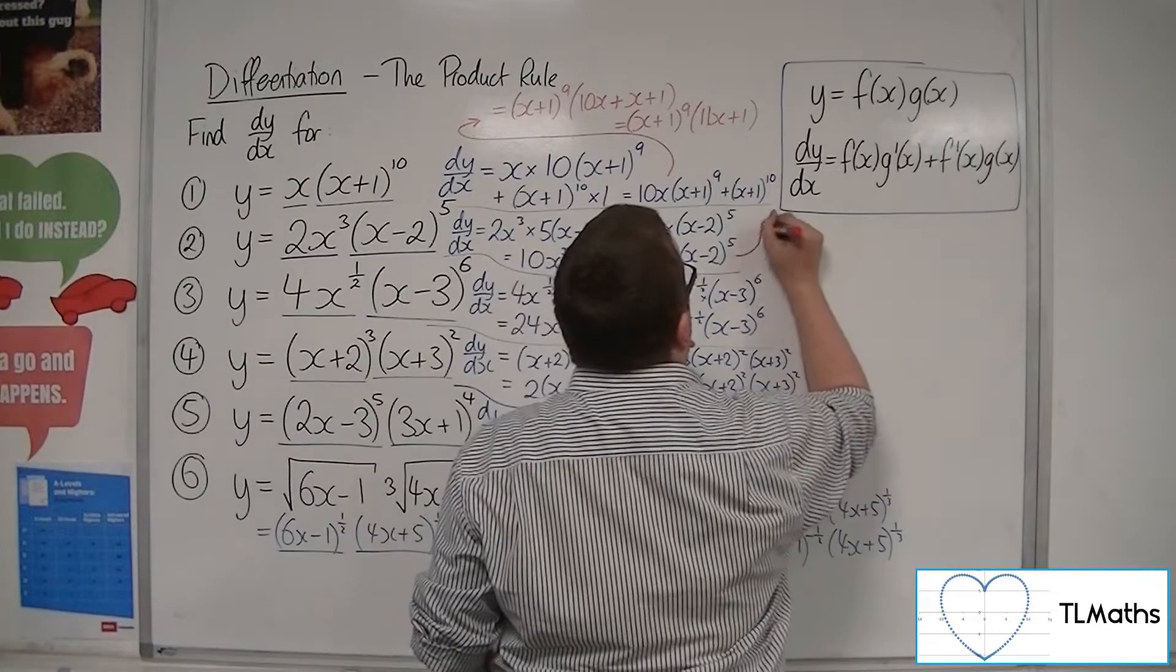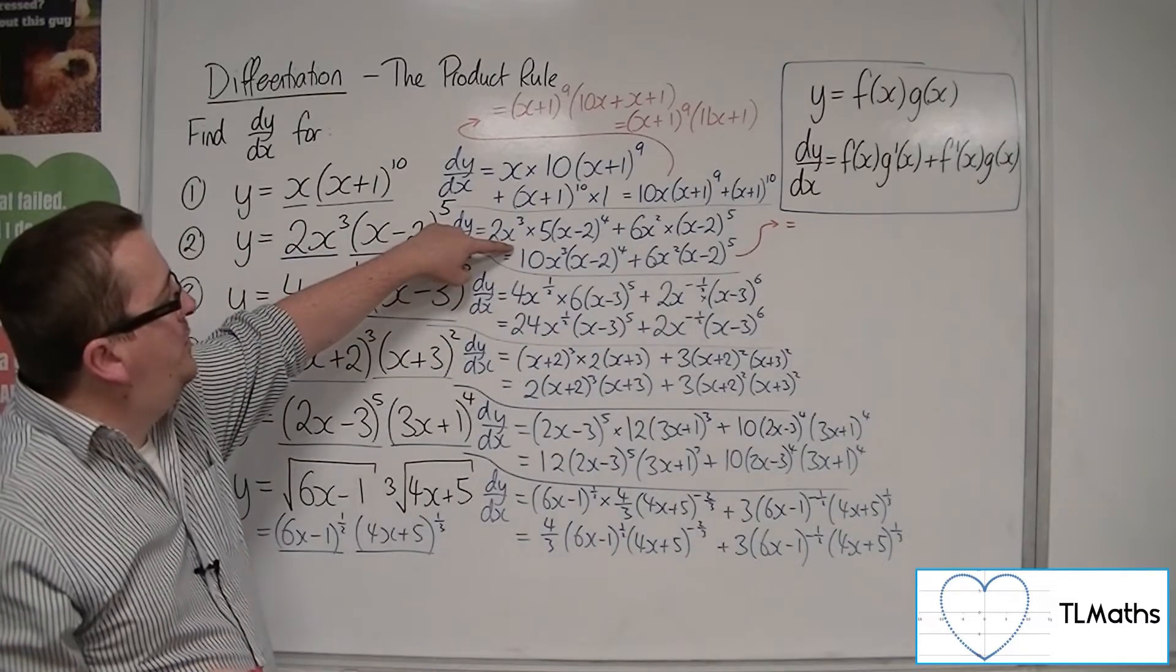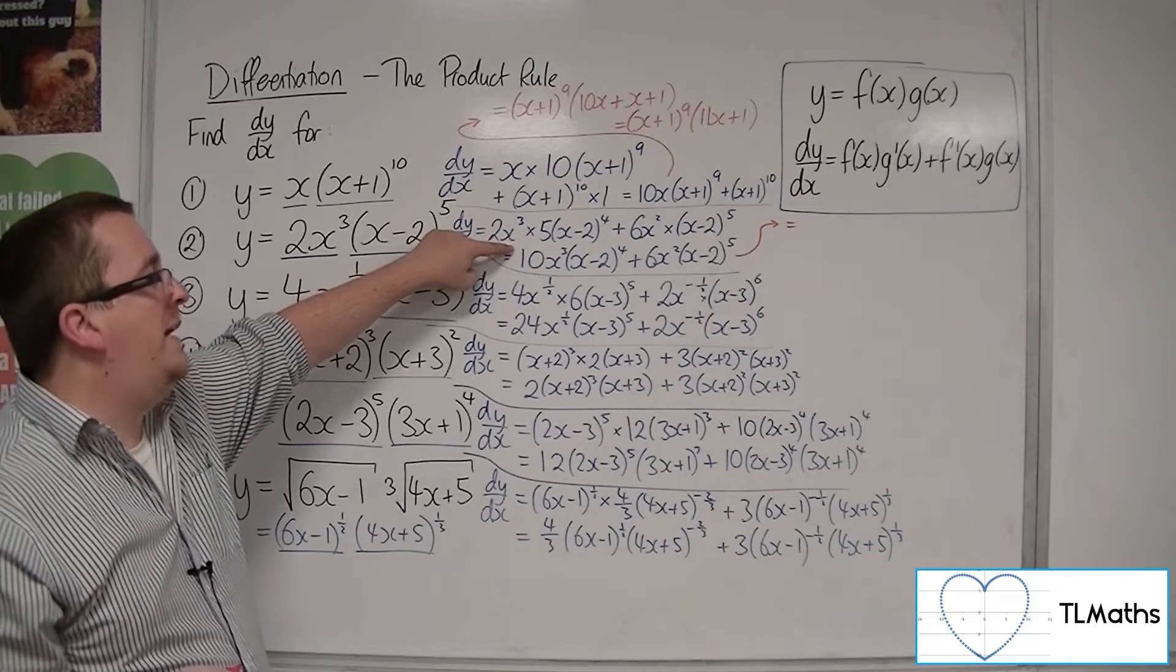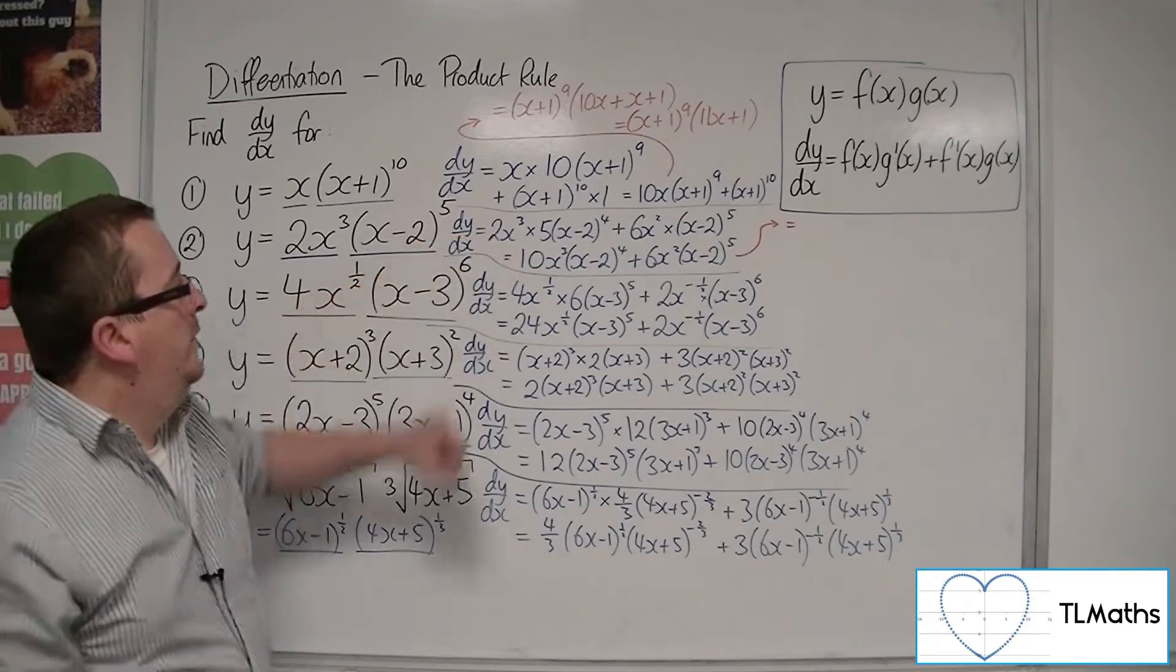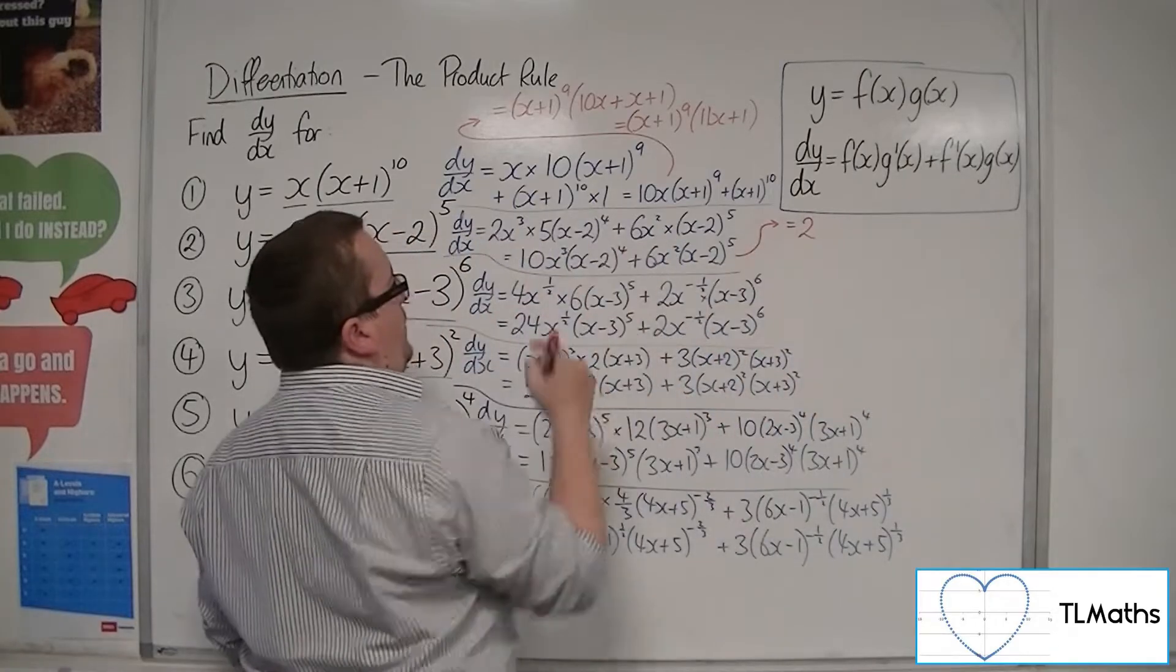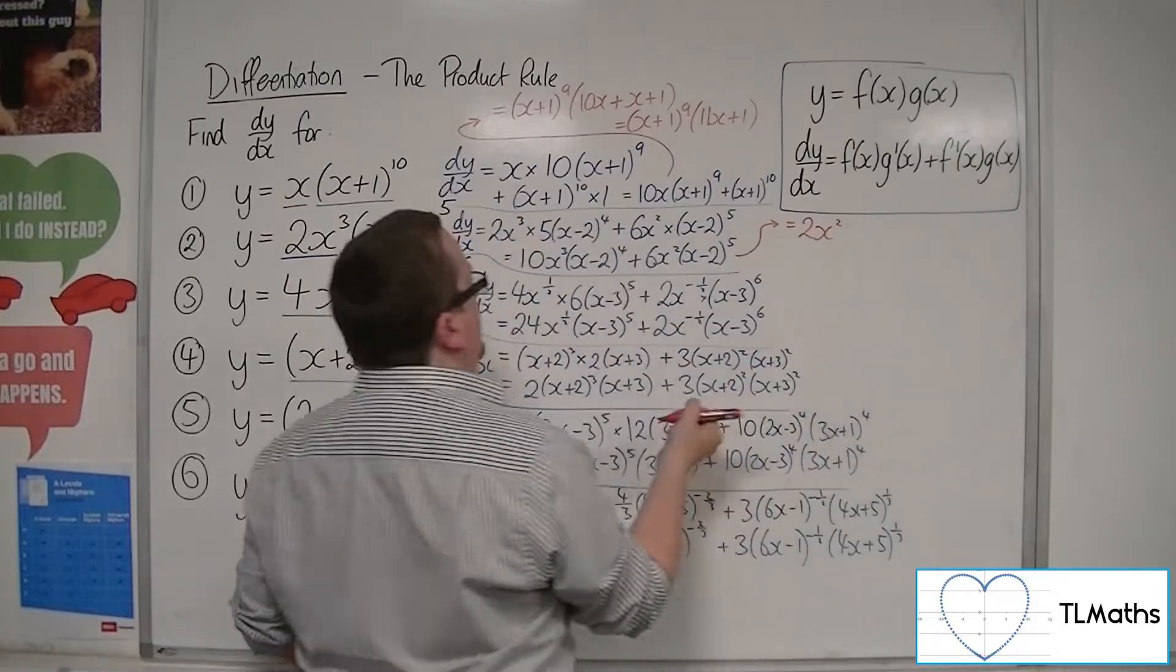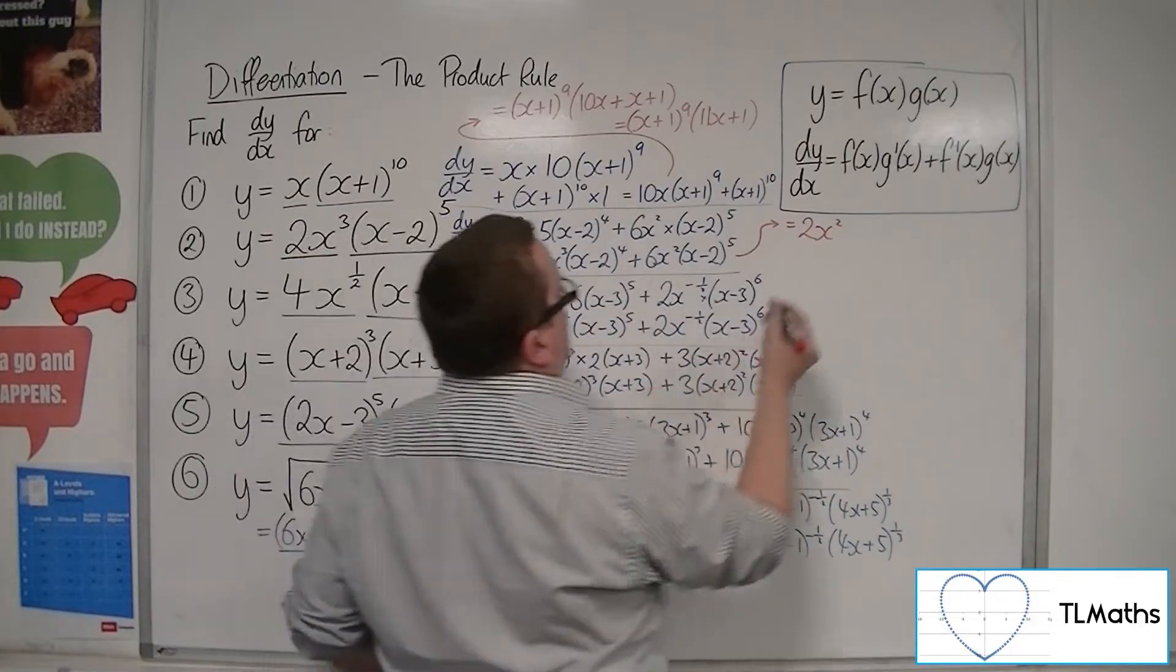For number two, we've got 10x³(x-2)^4 plus 6x²(x-2)^5. So I could factor out a 2, that's a common factor of 10 and 6. I can factor out x², I can factor out (x-2)^4.